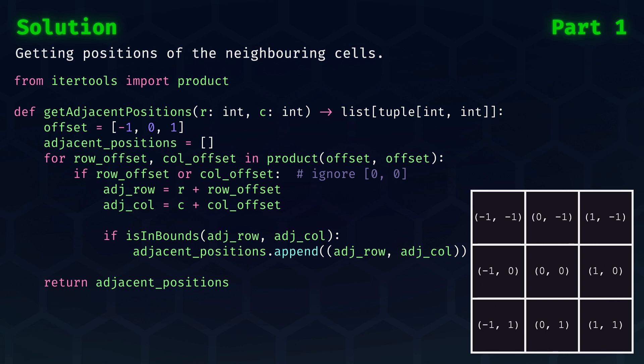The second sub-problem is to identify, for a given position, which cells are adjacent. We can use the product function from itertools to generate the offsets seen in the bottom right. Then for every row and column offset, we check if the adjacent cell is in bounds. If it is, then we know this is a position which we want to explore and return.